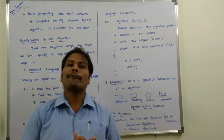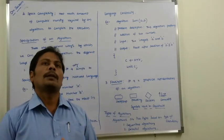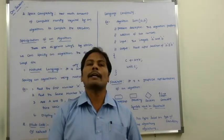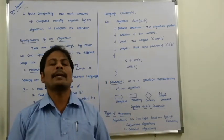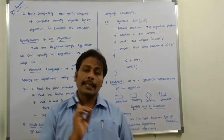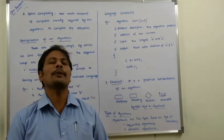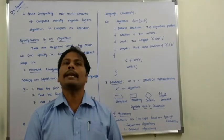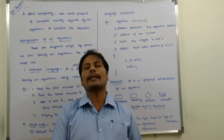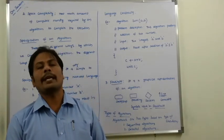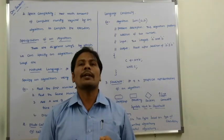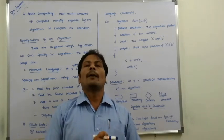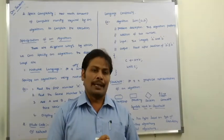For example, to perform the addition of two numbers using natural language specification: Step 1 — read the first integer A. Step 2 — read the second integer B. Step 3 — perform the addition of A and B, and store the result in variable C. Step 4 — display the result stored in variable C. This is the natural language specification for performing addition of two numbers.